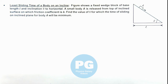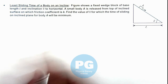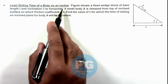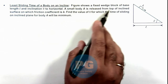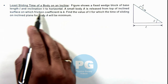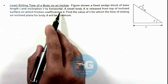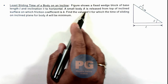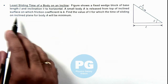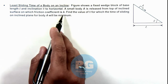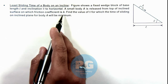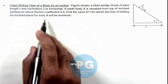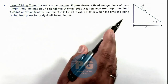This illustration is about the calculation of the least sliding time of a body on an incline. The figure shows a fixed wedge block of base length l and inclination theta to the horizontal. A small body A is released from the top of the incline surface on which the friction coefficient is k. We are required to find the value of theta for which the time of sliding on the incline plane will be minimum.